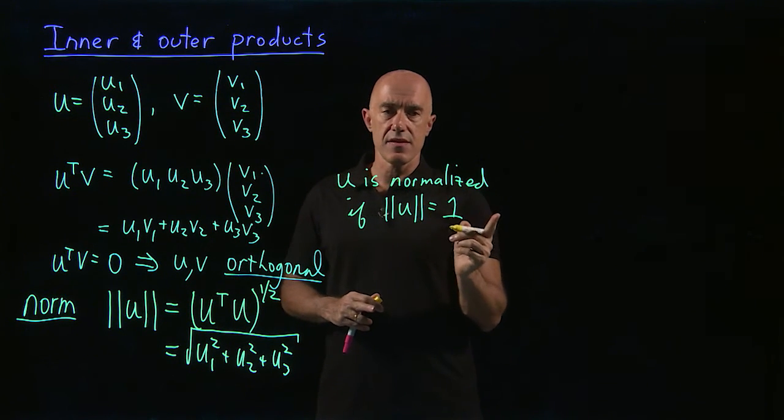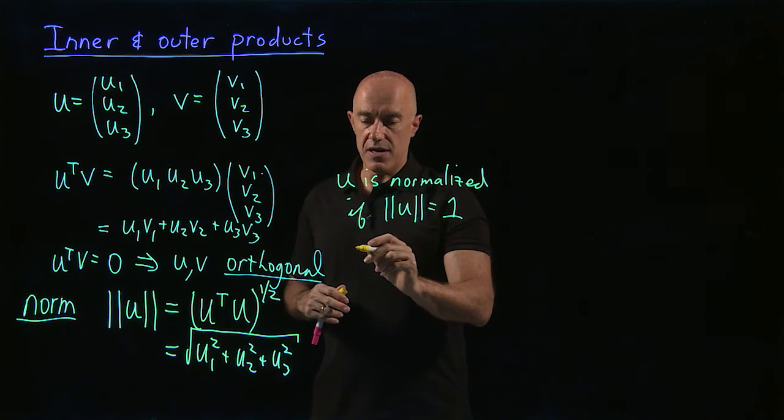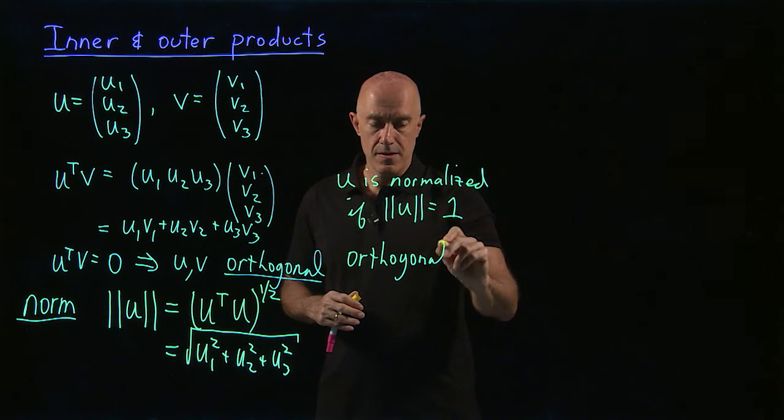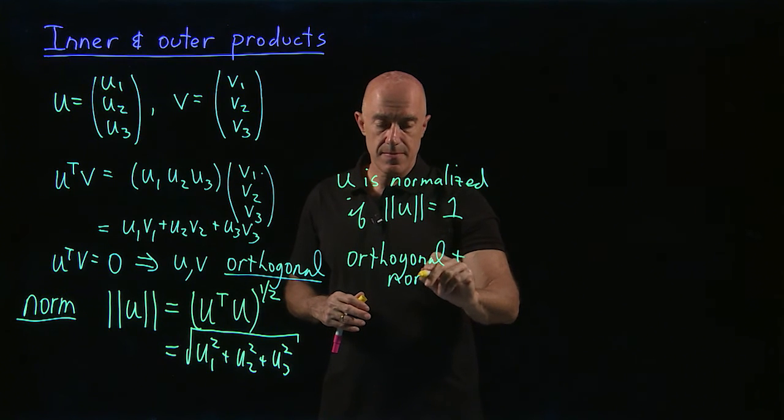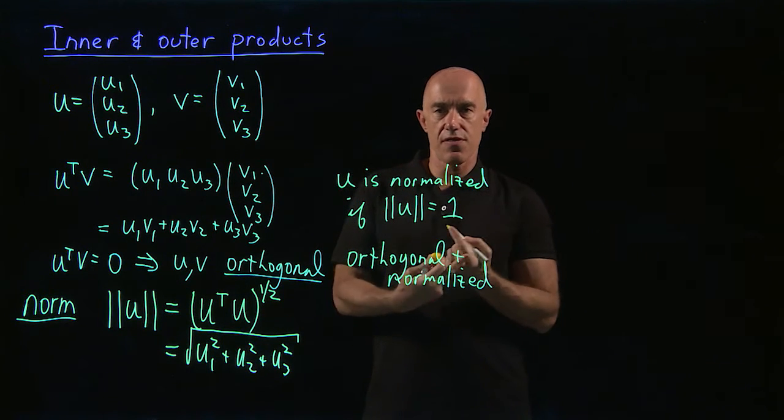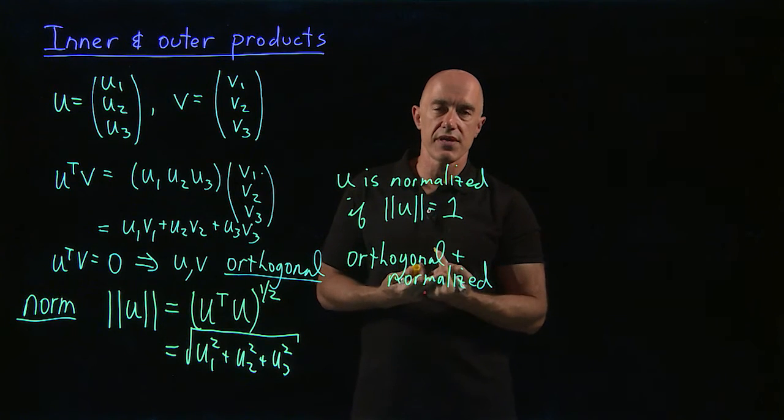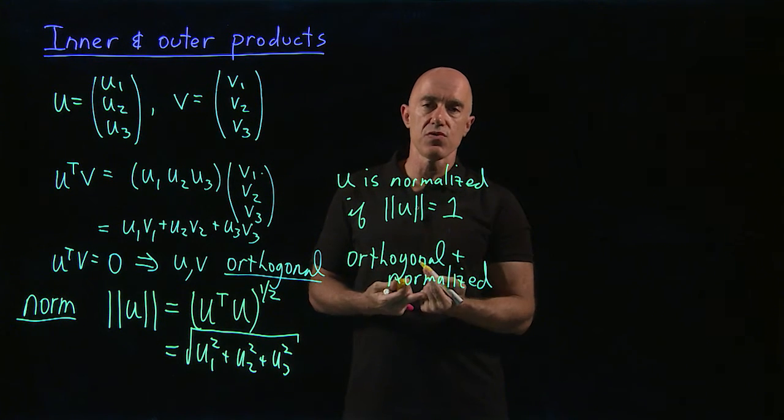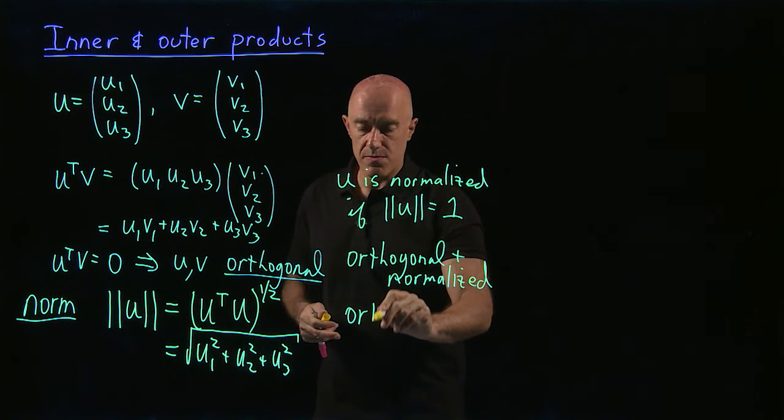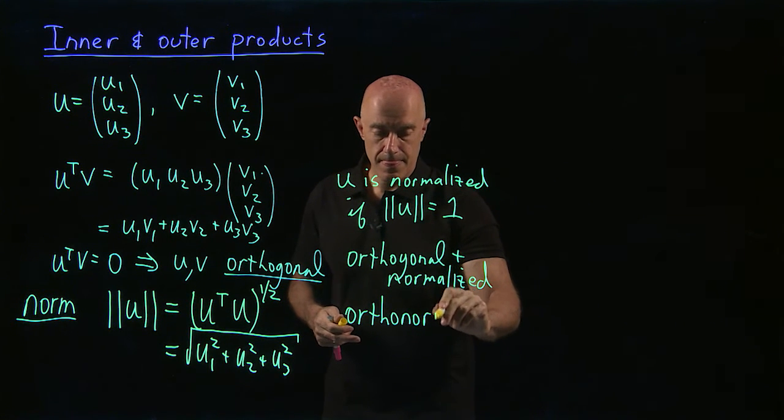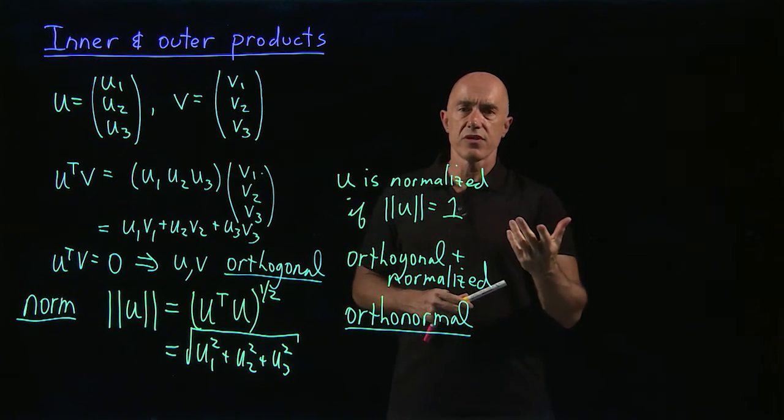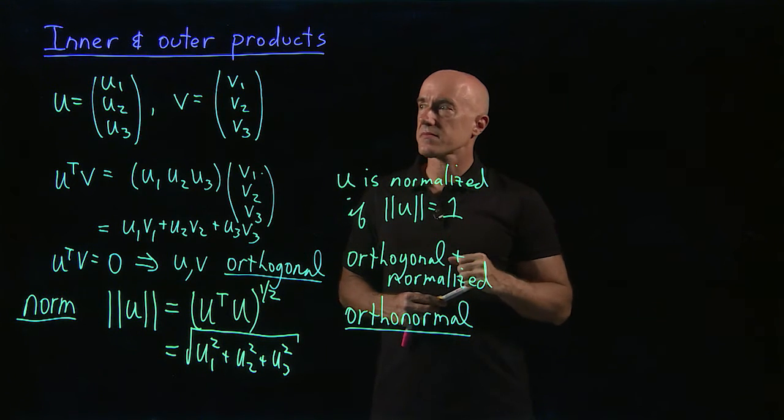Then there's another terminology. If two vectors are orthogonal plus normalized, then we say that the vectors are orthonormal. So that means we have two vectors, u and v. They're orthogonal, so u transpose v equals zero. And they're normalized. So the norm of u is one, and the norm of v is one. Then we say that the vectors are orthonormal. So that's a word that is used very frequently in matrix algebra.